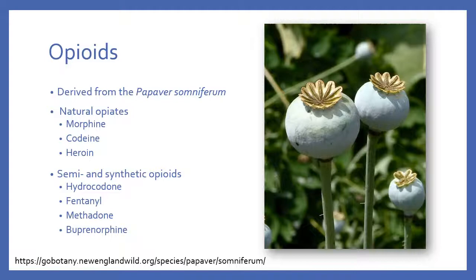When we talk about natural opiates, these are typically things derived specifically from the poppy plant itself. This includes morphine, codeine, and also heroin, which will become important later in this talk. Since then, we've developed semi-synthetic and synthetic opioids, which share some structural similarities with those natural opiates. Really anything semi or synthetic is called an opioid. Clinically you'll hear the terms used interchangeably. Semi and synthetic examples include hydrocodone, oxycodone, fentanyl, methadone, and buprenorphine.